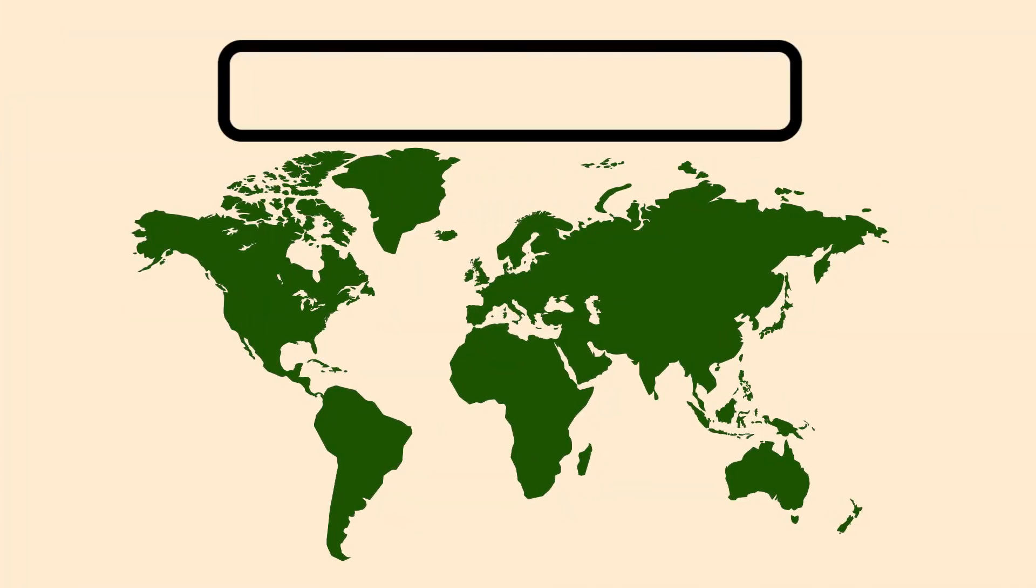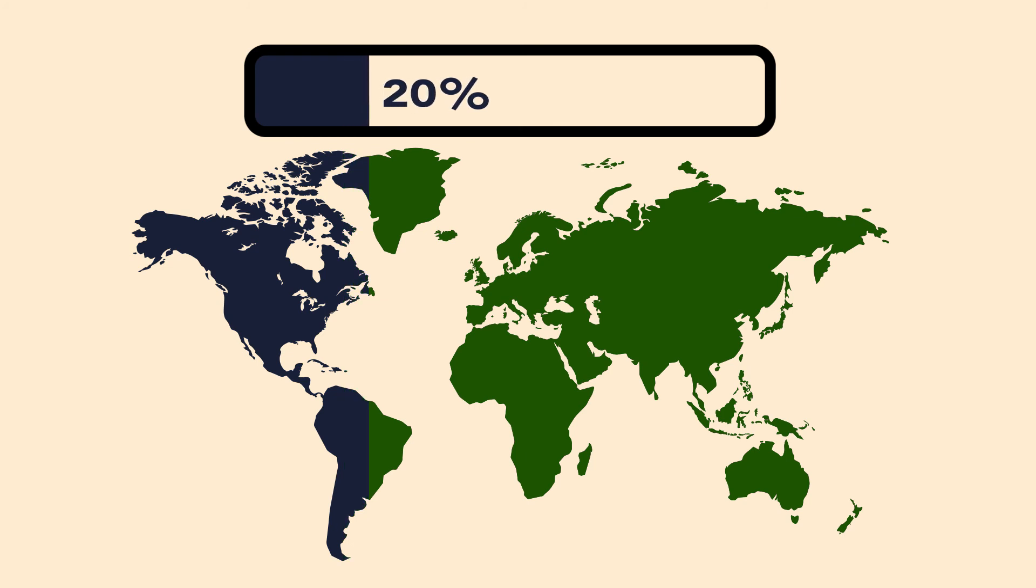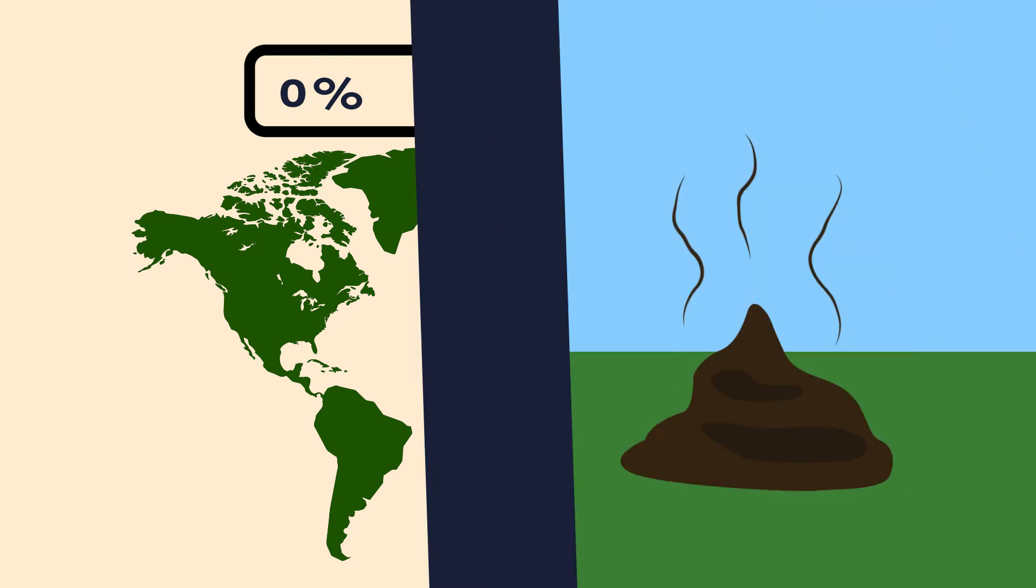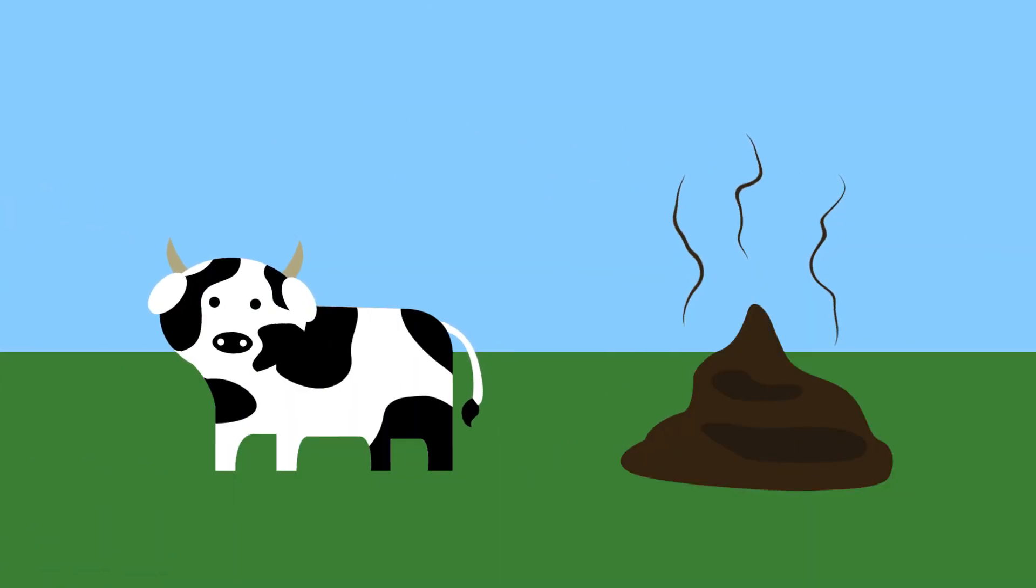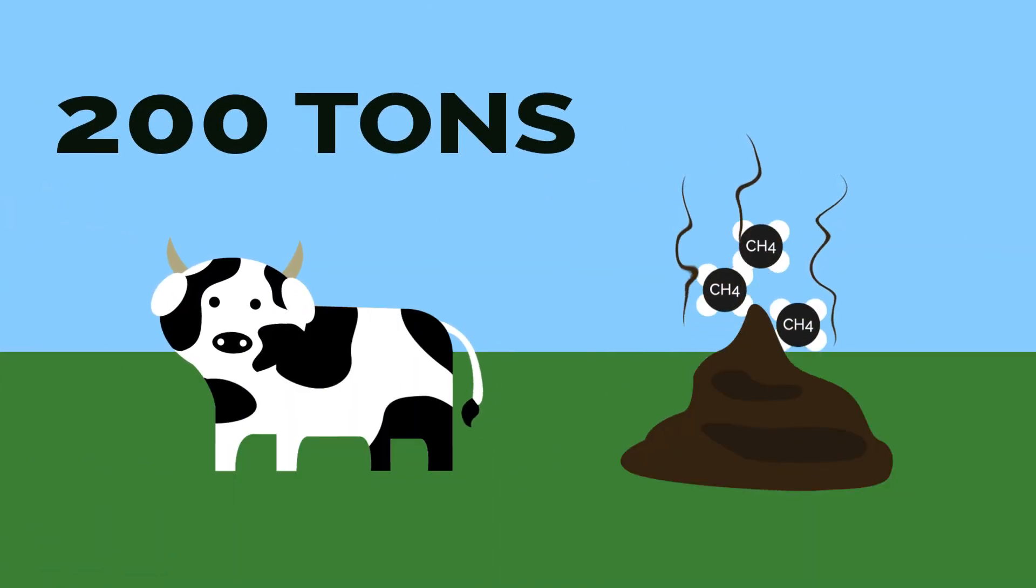Deforestation contributes to about 20% of all carbon emissions worldwide, and this can easily be reduced if we just choose to take action. The waste that is produced by agriculture adds around 200 tons of methane and nitrous oxide to the atmosphere every year.